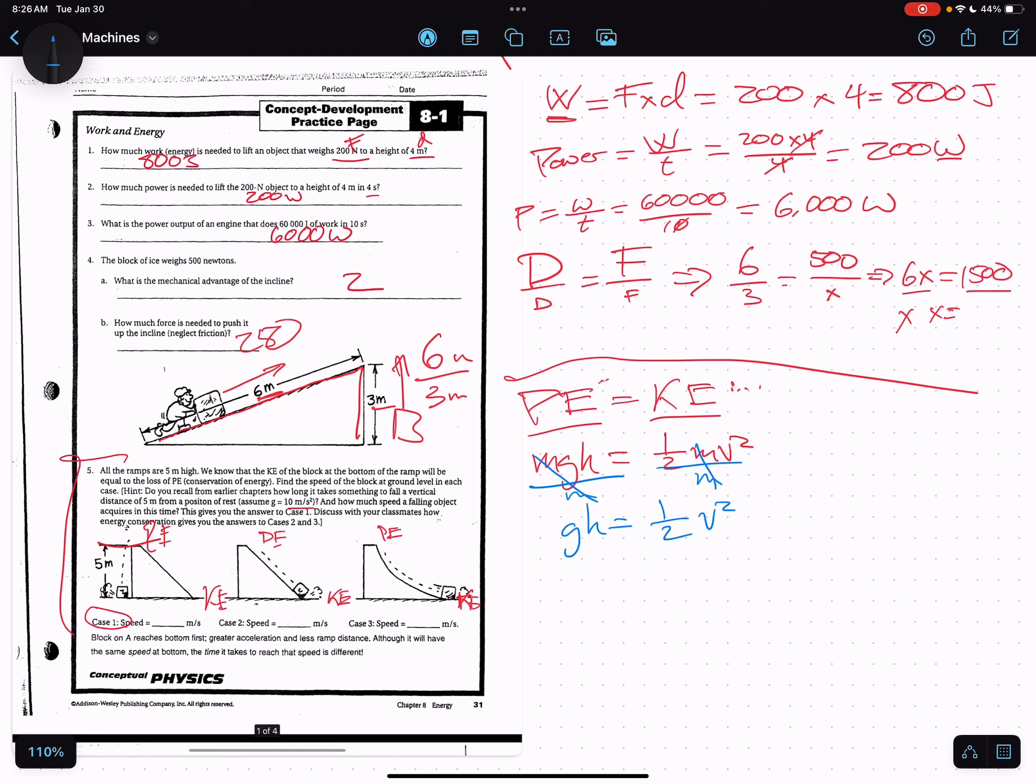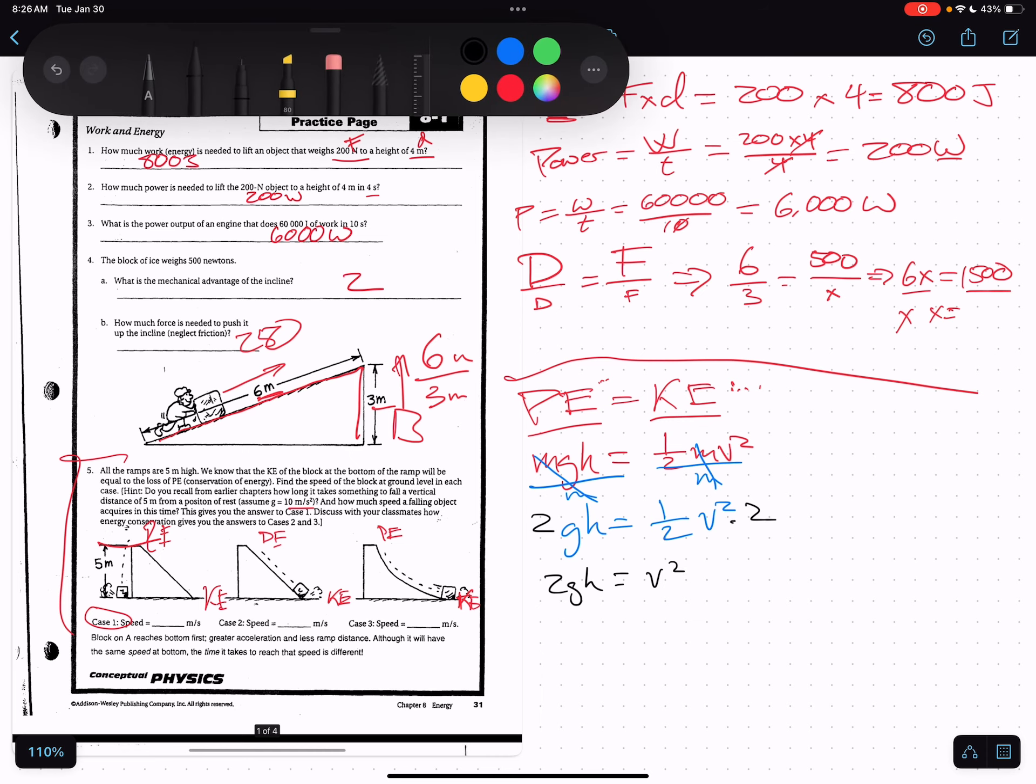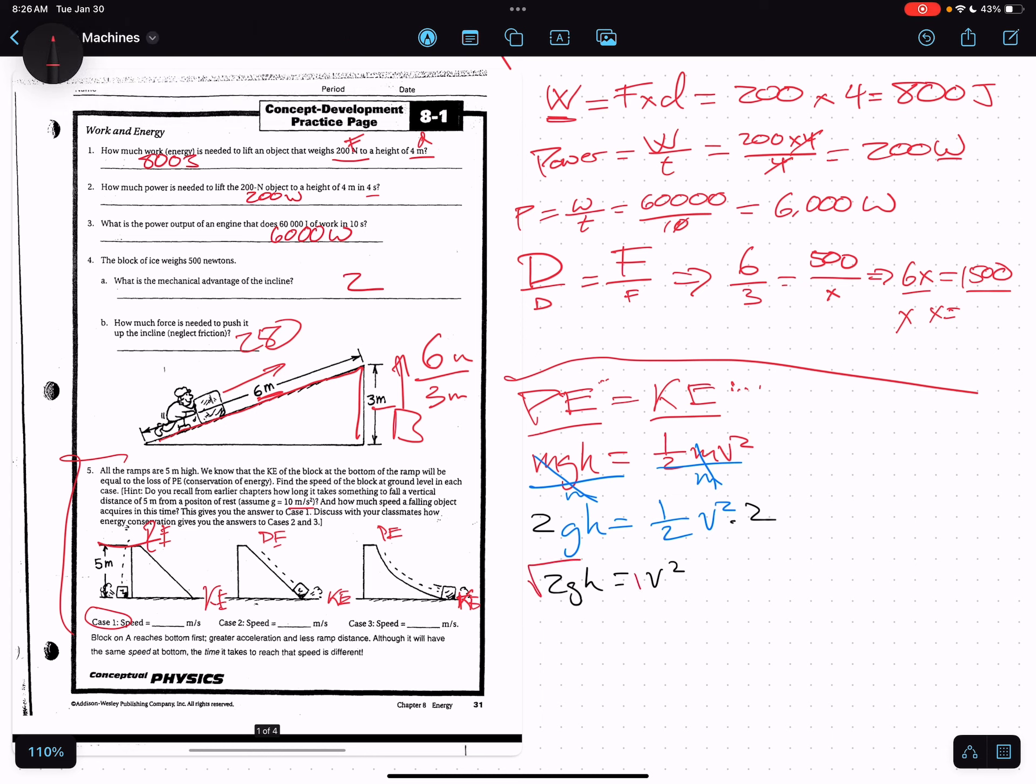All right, I'm going to multiply both sides by two. And now I have two GH is equal to V squared. And finally, we're going to square root both sides. So V is equal to square root of two GH.